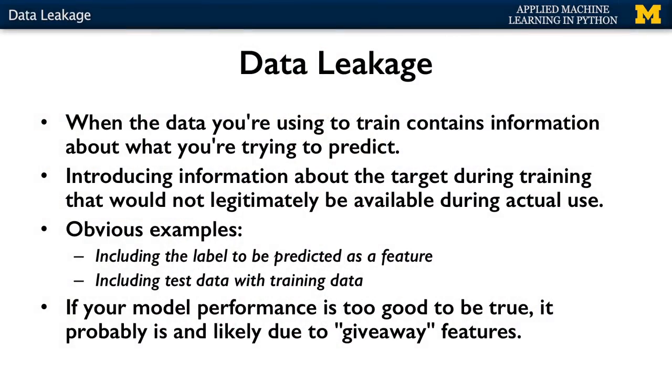In data science, the term data leakage, sometimes just referred to as leakage, describes the situation where the data you're using to train a machine learning algorithm happens to include unexpected extra information about the very thing you're trying to predict. Basically, leakage occurs any time that information is introduced about the target label or value during training that would not legitimately be available during actual use.